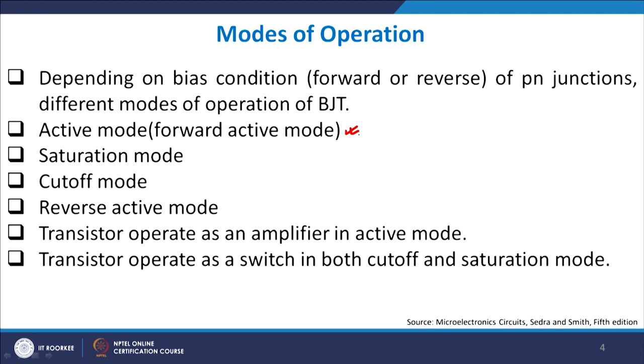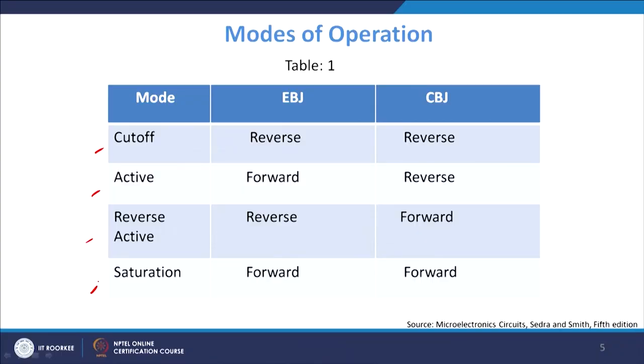Now let us look at the various modes of operation, which depend upon the bias condition. There are two biases, giving 2² = 4 possible modes. Each battery source can be either forward or reverse biased, giving: forward-forward, forward-reverse, reverse-reverse, and reverse-forward. EBJ refers to the emitter-base junction and CBJ refers to the collector-base junction. Each combination gives rise to a distinct mode of operation.